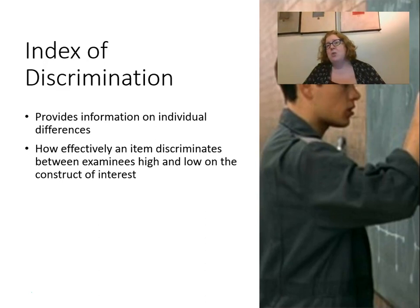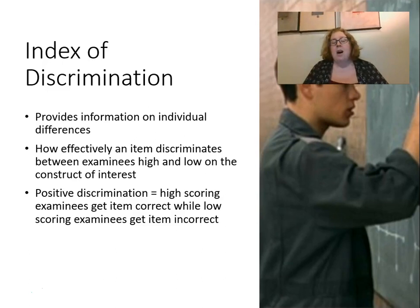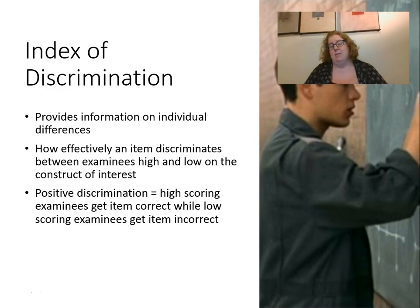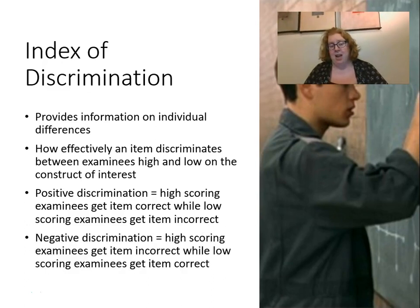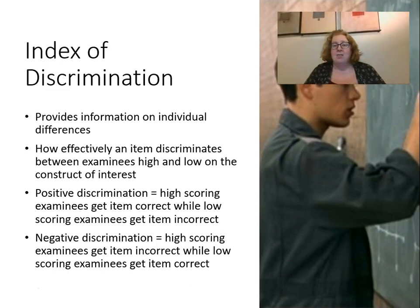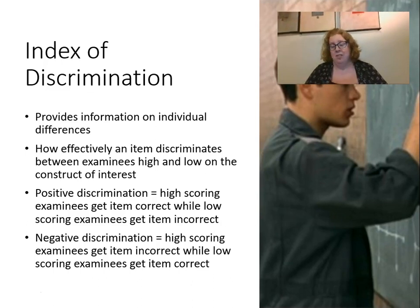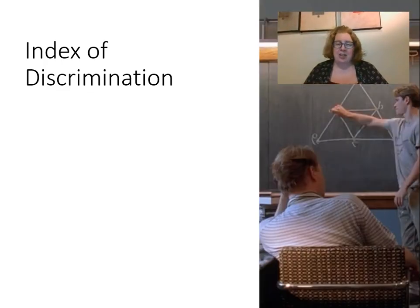A positive discrimination means high-scoring examinees got the item correct while low-scoring examinees got it incorrect. Negative discrimination would be the opposite — usually meaning we scored the item wrong, that somehow we mislabeled the correct answer. Negative discrimination is really bad and usually means we made a mistake as a teacher in how we wrote or scored the item.